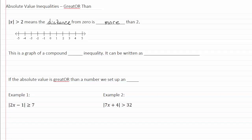So if we have an absolute value that looks like this, this is a graph of a compound or inequality. It could be written as x is less than negative two or x is greater than two. So if the absolute value is greater than a number, we are setting up an or equation situation, where we're getting this type of graph.